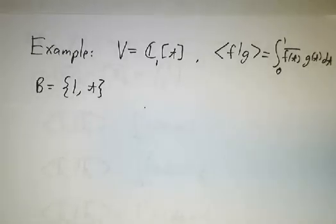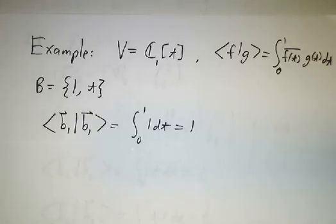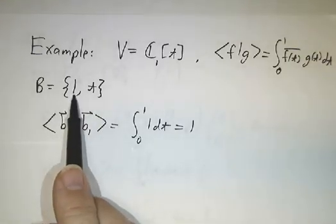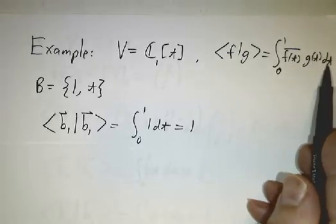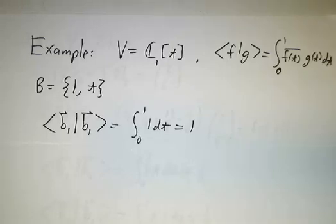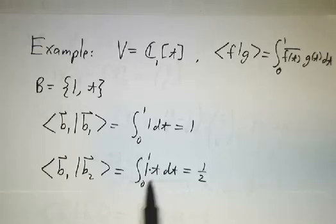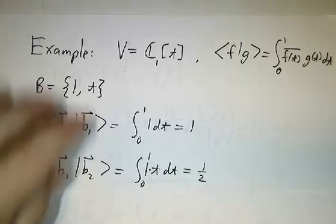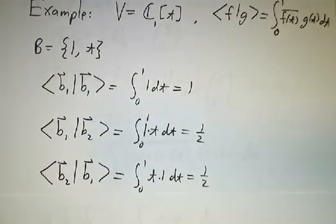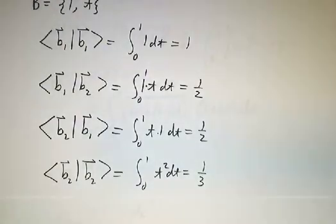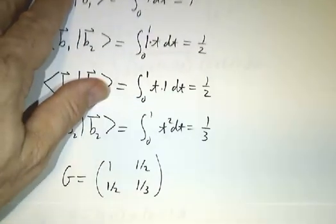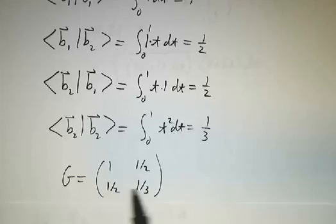Our basis is 1 and t. So we compute the inner product of b_1 with b_1, that's the inner product of 1 with 1, the integral of 1 times 1 from 0 to 1, which gives 1. The inner product of 1 with t is the integral of 1 times t from 0 to 1, giving 1/2. The inner product of t with 1 is the integral of t times 1, giving 1/2. And the inner product of t with t is the integral of t times t from 0 to 1, giving 1/3. So our metric matrix is 1, 1/2, 1/2, 1/3.